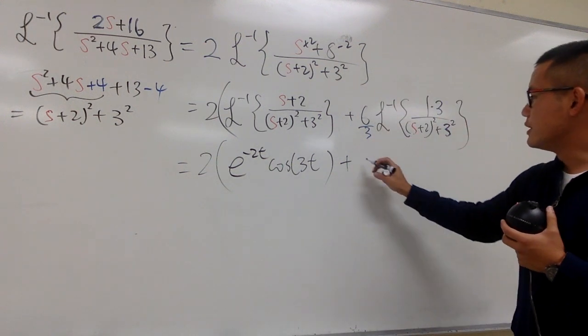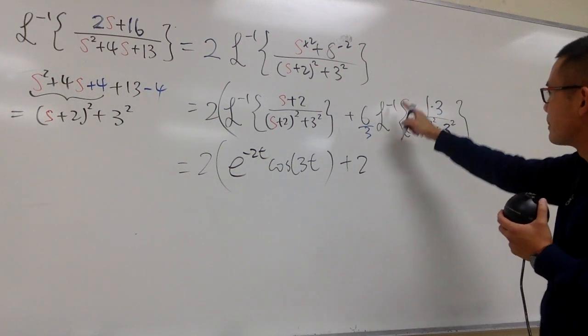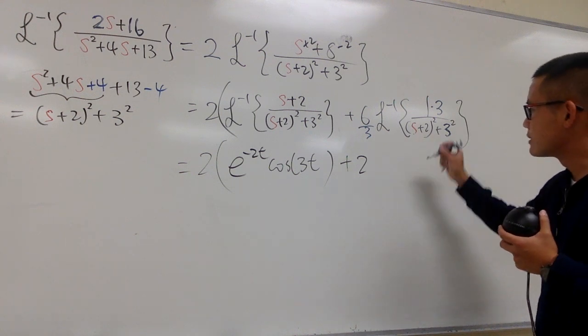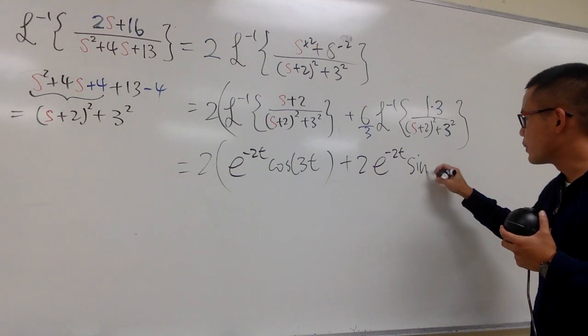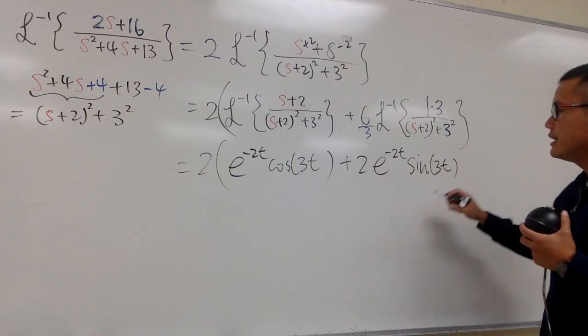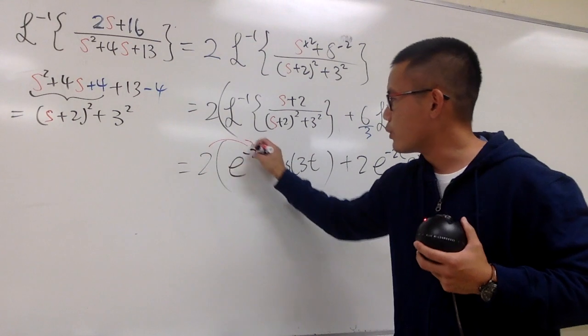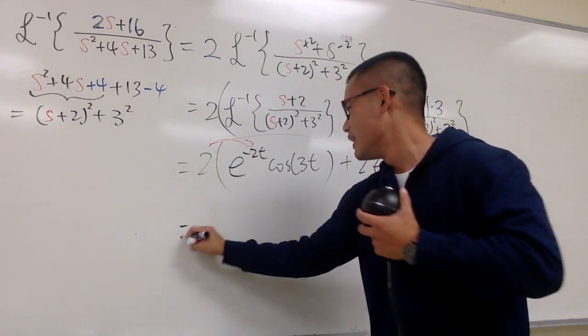So, 6 divided by 3 is 2, and then the inverse Laplace of this. Well, we have the s plus 2, so it's going to be e to the negative 2t. And then this is the sine function, so we have sine of 3t. And this is pretty much what we have. At the end, of course, let's draw the arrows, this and that, to make it cute, right?